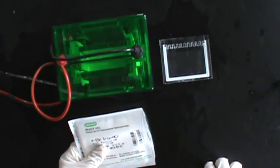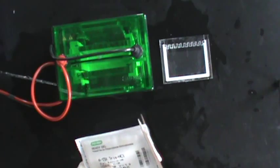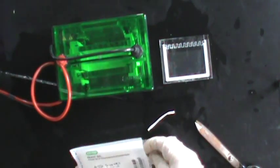So, the gel will come in a packet like this. Using the scissors, you need to cut open the gel package and remove the gel.